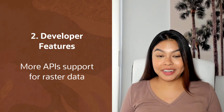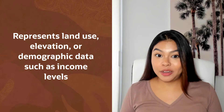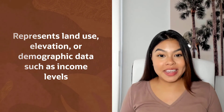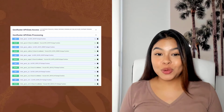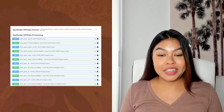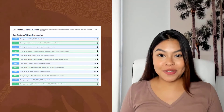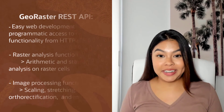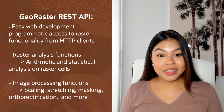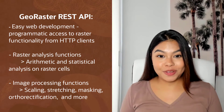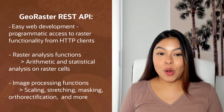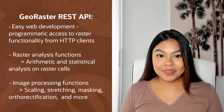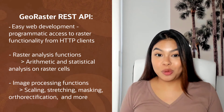Second, developer features. We've added REST API support for raster data. Raster data includes satellite images, aerial images from drones, and is used to represent and analyze things like land use, elevation, or even demographic data such as income levels. Previously, you have been able to work with raster data through PL/SQL and Java APIs. We provide hundreds of algorithms in the database to process raw imagery data and produce images that you can use in applications at the other end of the workflow. Now, we offer programmatic access to all of this functionality through a REST interface. An OCI Marketplace image is also available for easy deployment.